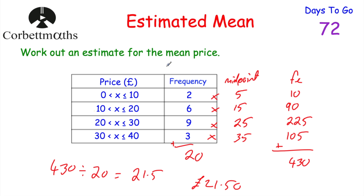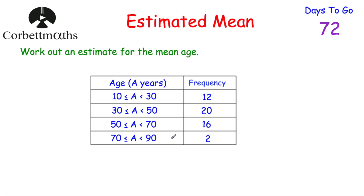So just to recap: if you're given a grouped frequency table and you want to find an estimate for the mean, you need to add on two columns - the midpoints, because we don't know the actual values, and then the FX column where you multiply the frequencies by those midpoints. Add those up to get the grand total, then divide by the total frequency. Here's a question for you to try - pause the video and work out an estimate for the mean age from this grouped frequency table.